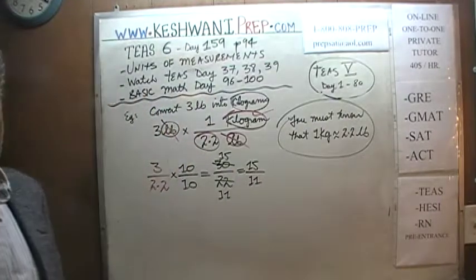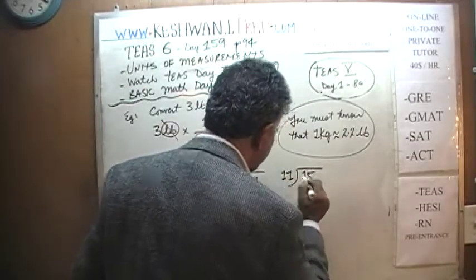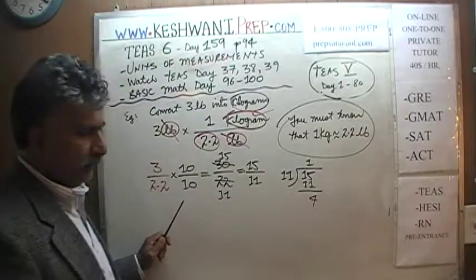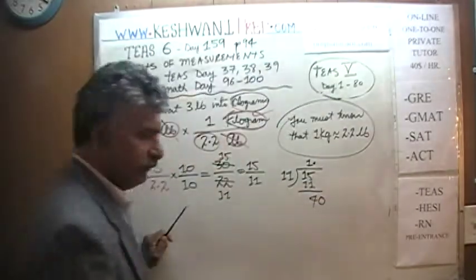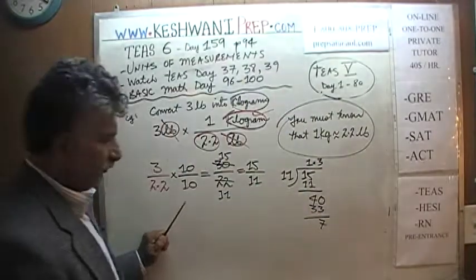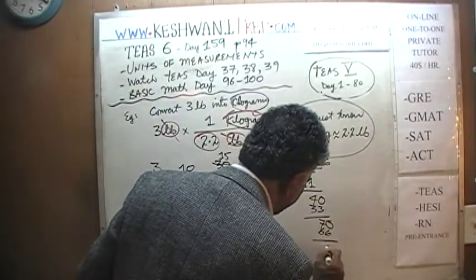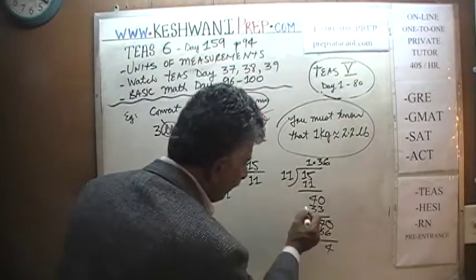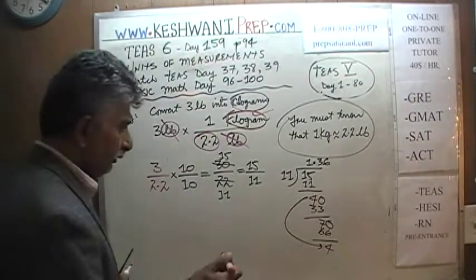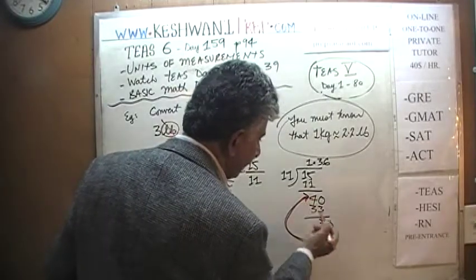Now we have to do the division by hand — 15 divided by 11. 15 has one 11 with a remainder of 4. Introduce the decimal and it becomes 40. 40 has three 11s; 3 times 11 is 33, remainder 7. Stick a zero — it becomes 70. 70 has six 11s; 6 times 11 is 66, remainder 4. We had a remainder of 4 before and a remainder of 4 again — as soon as you get the same remainder, that's your cue that the pattern is going to repeat.